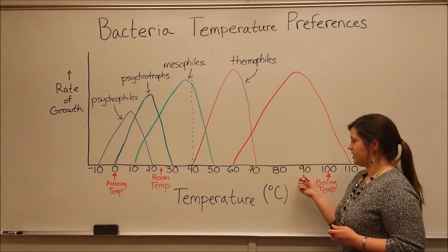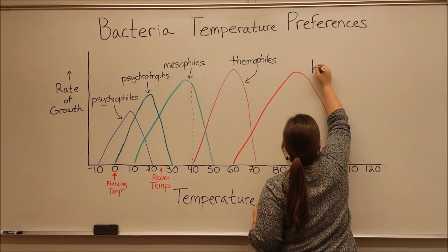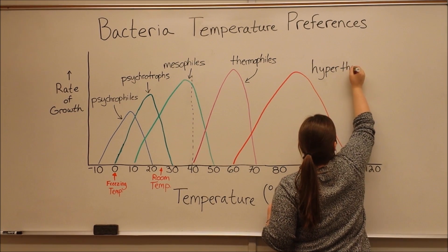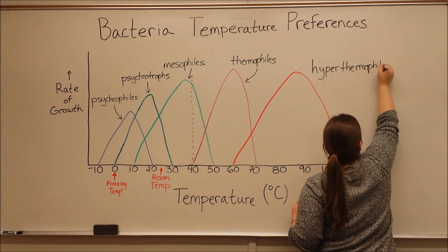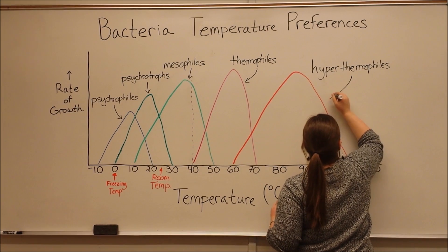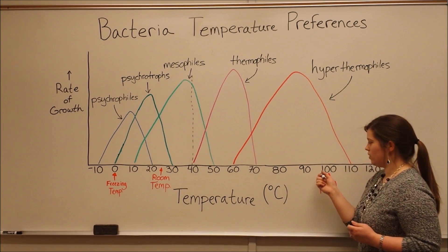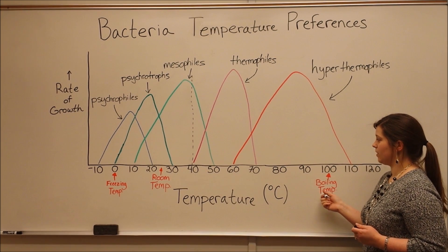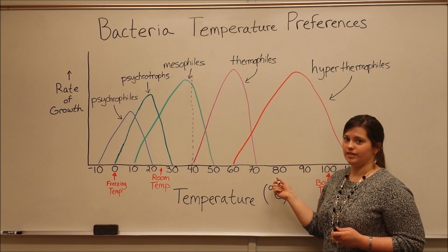These are bacteria that can grow even in temperatures around the boiling temperature of water. They all typically grow above 60 or 70 degrees Celsius.